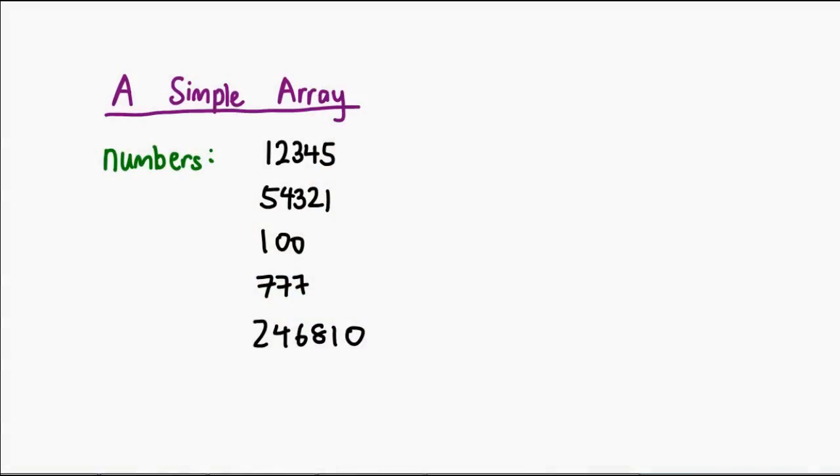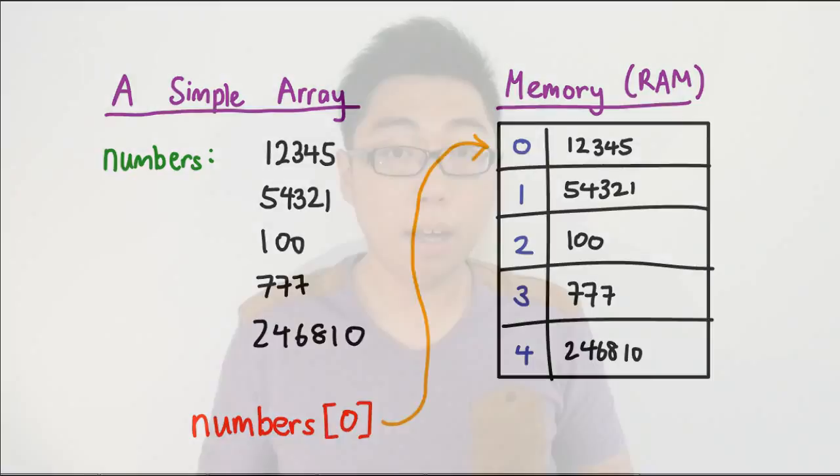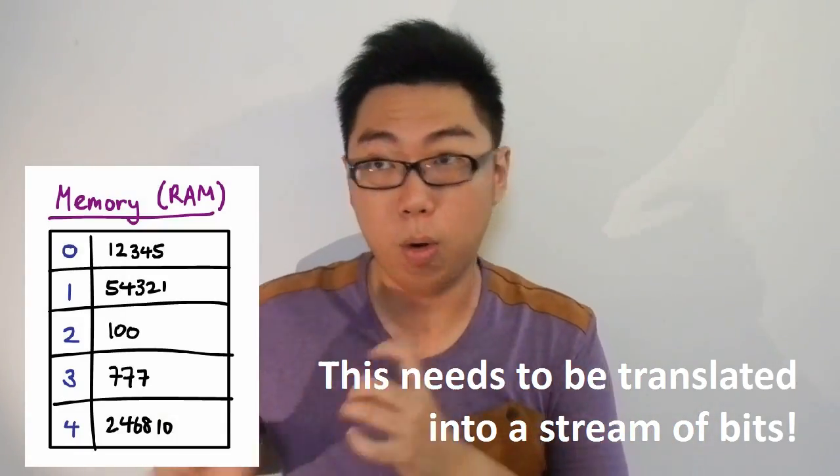Now, when you actually have your data structure while running your program, essentially what happens is all this information is loaded into memory. So let's take for example this particular array. Now you would expect it to be stored in memory, maybe something like this. And then if you want to look at the first element, all I have to do is save this, and your computer knows where to find this information. But then the problem comes about when I actually want to send this entire array to someone else, I have to somehow translate this into some information that can be sent sequentially over a connection.